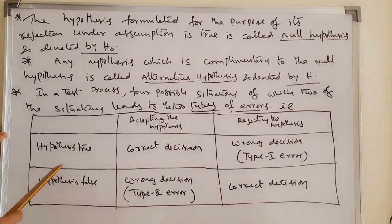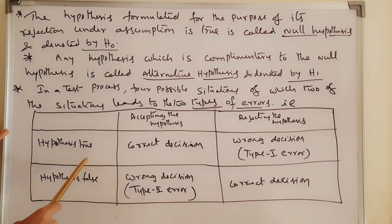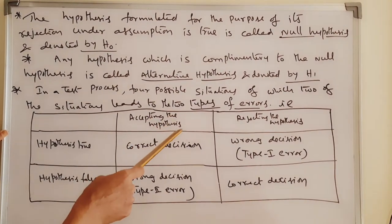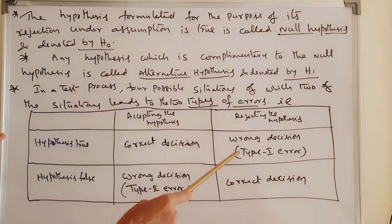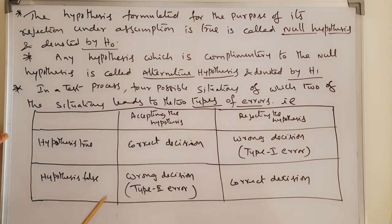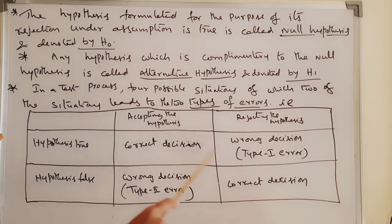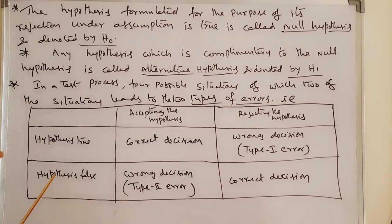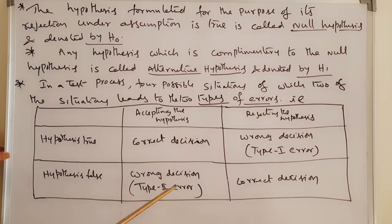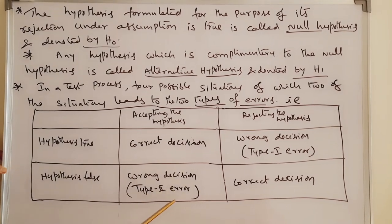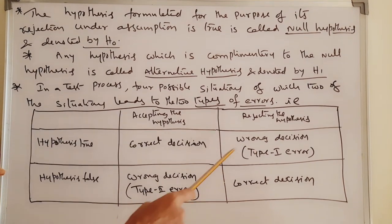Row-wise: hypothesis is true, hypothesis is false. When hypothesis is true and we accept the hypothesis, that is the correct decision. When hypothesis is true and we reject the hypothesis, that is a wrong decision — that is called Type 1 error. When hypothesis is false and we accept the hypothesis, that is a wrong decision — that is called Type 2 error. When hypothesis is false and we reject the hypothesis, that is the correct decision.